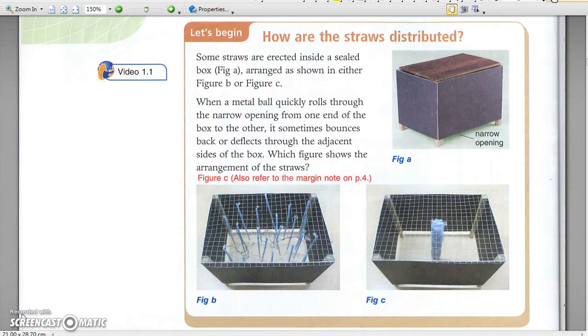How are the straws distributed? It is a black box. To find out what is inside the black box, marbles are shot and their subsequent motions are observed. Similarly, atoms and nuclei are also black boxes to scientists. Subatomic particles are shot towards an atom to investigate the structures of atoms and nuclei.